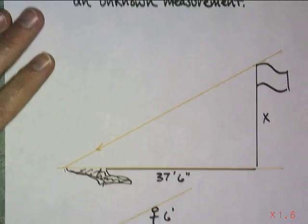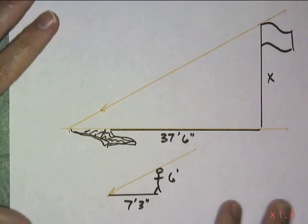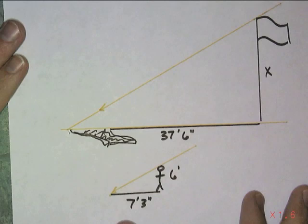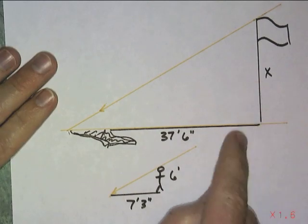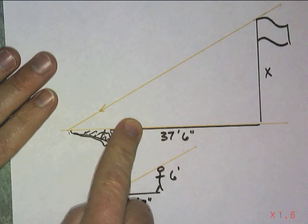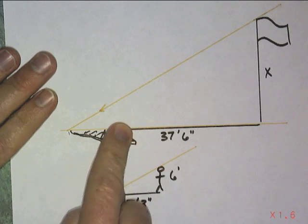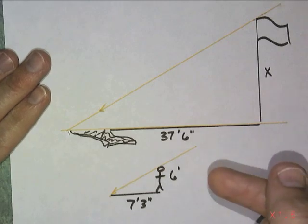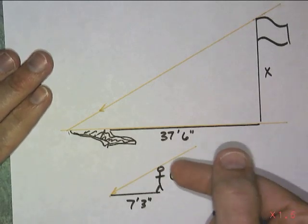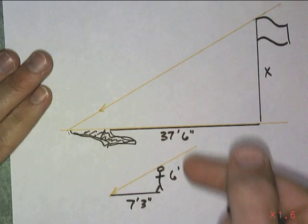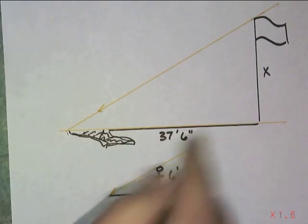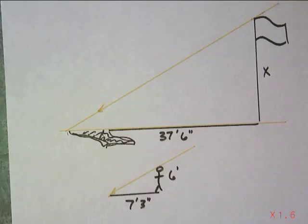The popular example is a shadow problem. I have drawn a flagpole with a shadow of 37 and a half feet, and also a shadow of myself. I'm six feet tall and my shadow is seven feet three inches. What we'd like to do is find out how tall the flagpole is.